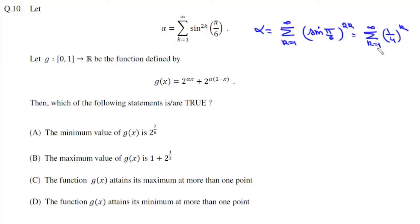Now this is nothing but a GP, so this is 1 by 4, 1 by 4 squared to infinite, and sum of this GP is a upon 1 minus r, which is 1 by 3. So value of alpha is 1 by 3.